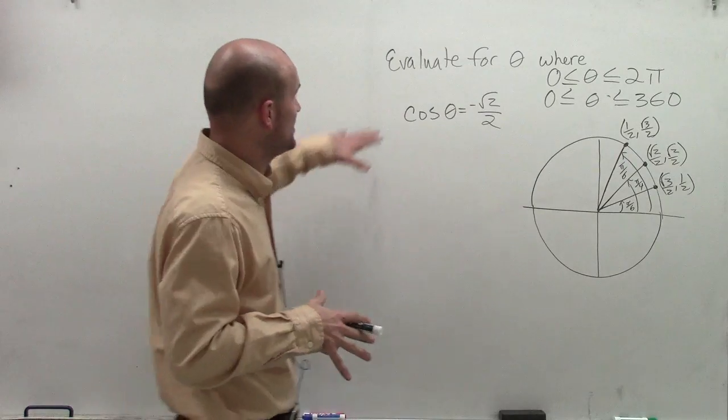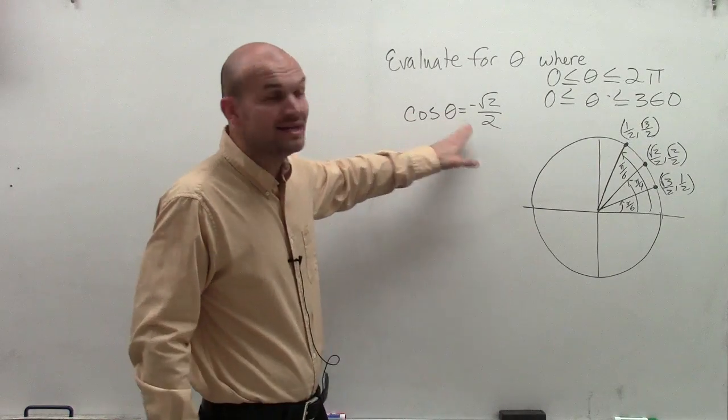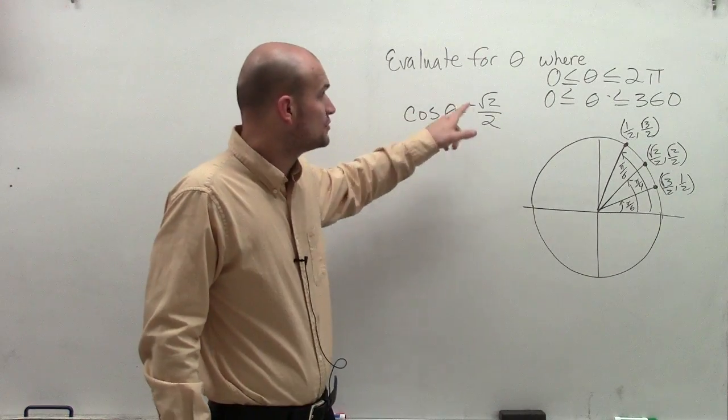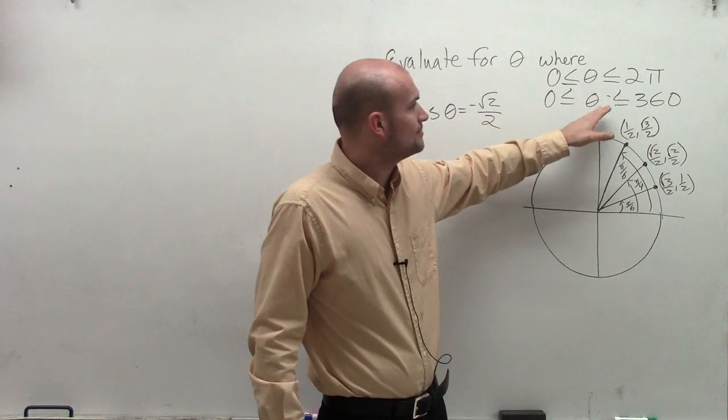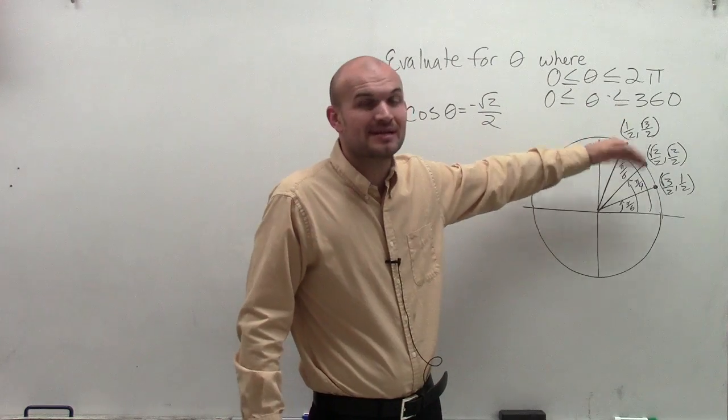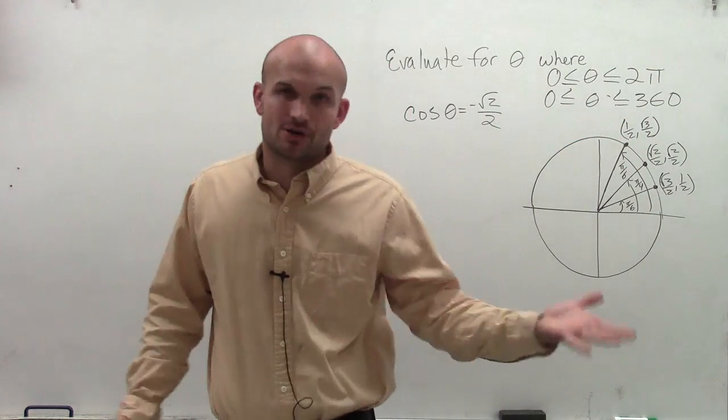OK, welcome. What I want to do is show you how to evaluate for theta when given a coordinate point, negative square root of 2 divided by 2, where our angle, either in radians or degrees, has to be between 0 and 2 pi or 0 and 360.